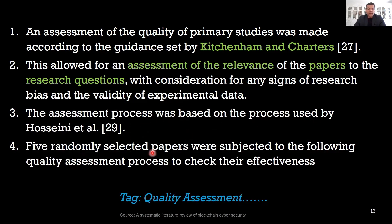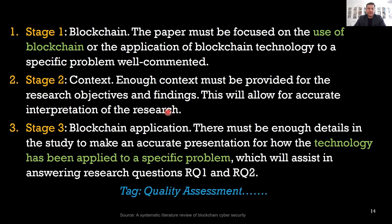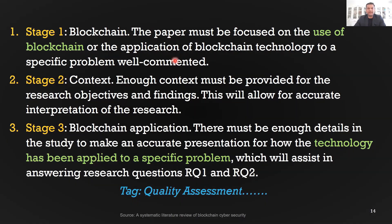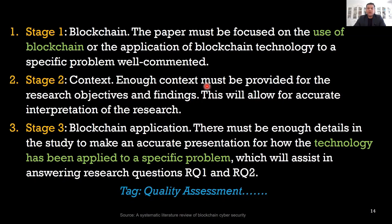The assessment process was based on the process used by Hosseini et al., where five randomly selected papers are subjected to the following assessment to check their effectiveness. Stage one: the paper must be focused on the use or application of blockchain technology to a specific problem.